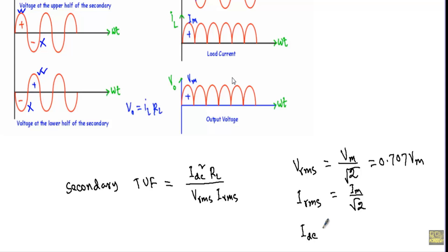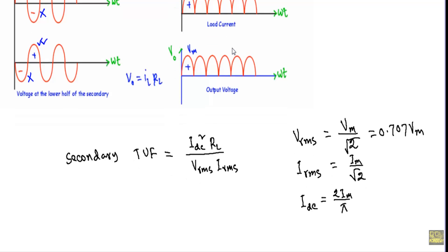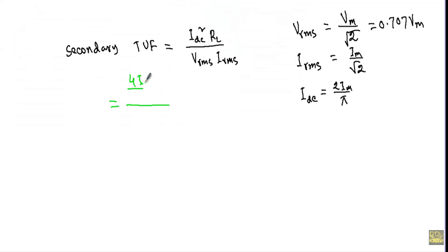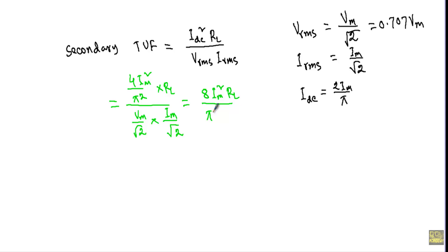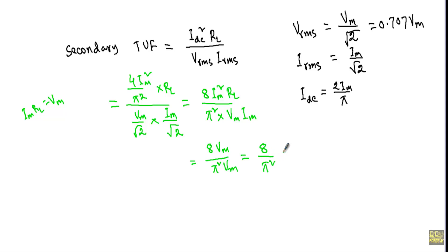For an unidirectional current, IDC equals 2Im divided by π. Substituting these values gives: (4Im² / π²) × RL, divided by (Vm / √2) × (Im / √2), which simplifies to 8Im²RL divided by π²VmIm. Since Im times RL equals Vm, this reduces to 8 divided by π², giving a value of 0.811.